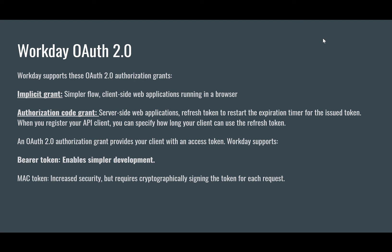Welcome back. In the last lecture I told you we are going to move forward and understand how to create a REST API client so that we can get the access tokens to make our REST API calls. Before we do that, there are a few things we need to understand — Workday uses OAuth 2.0 for authentication. The first thing we need to figure out is what kind of authentication with OAuth 2.0 we are going to use for our application.